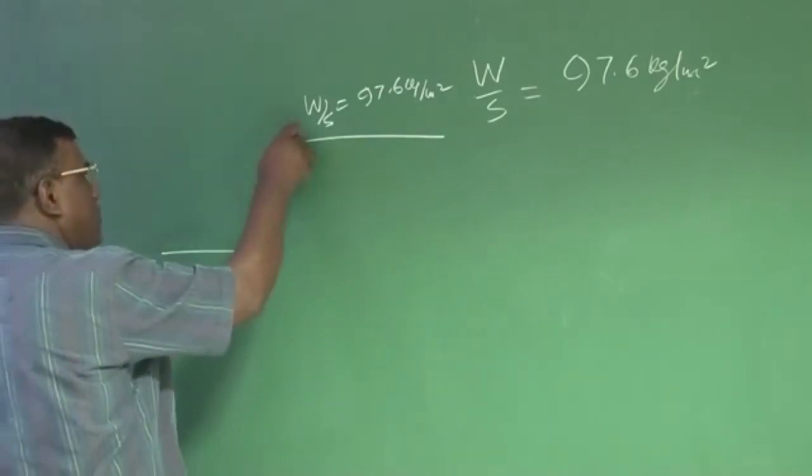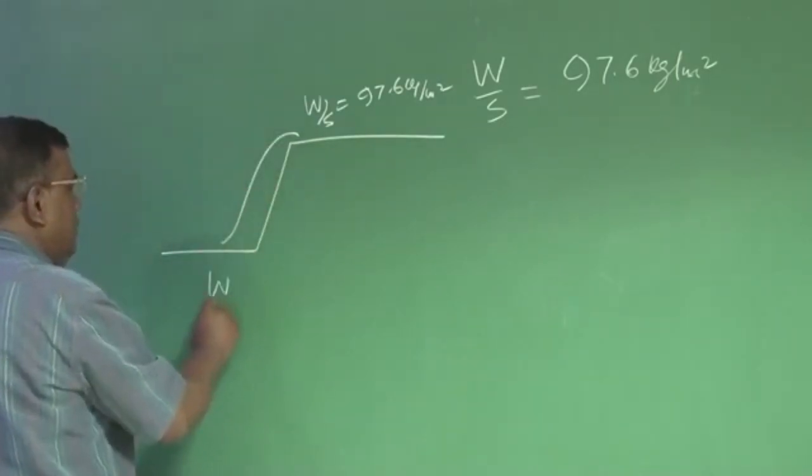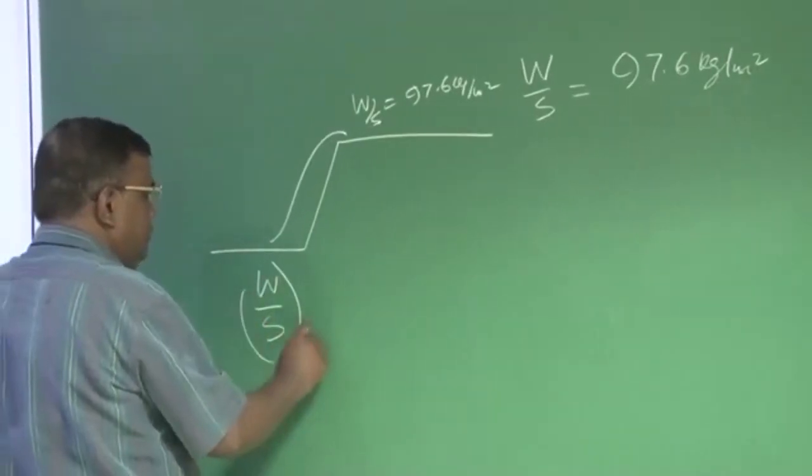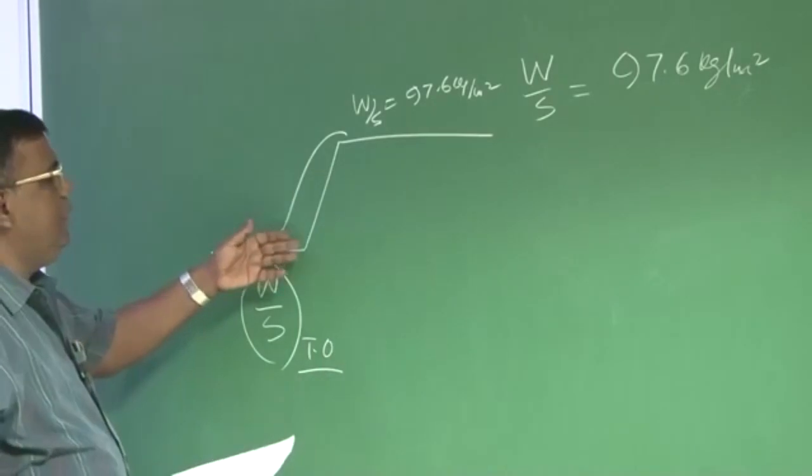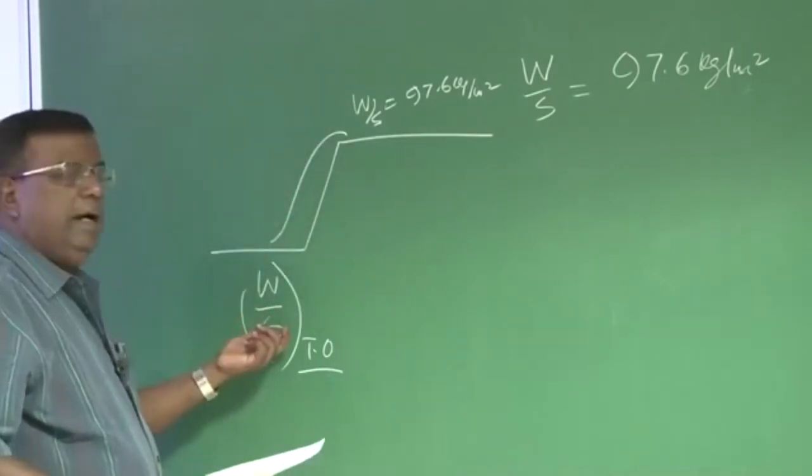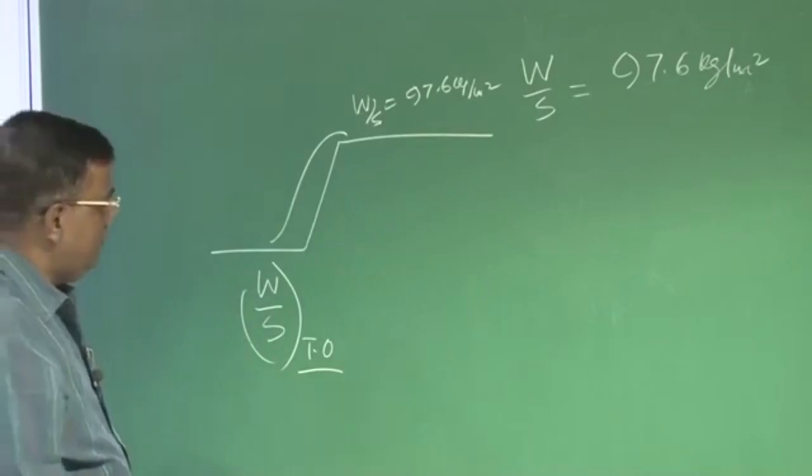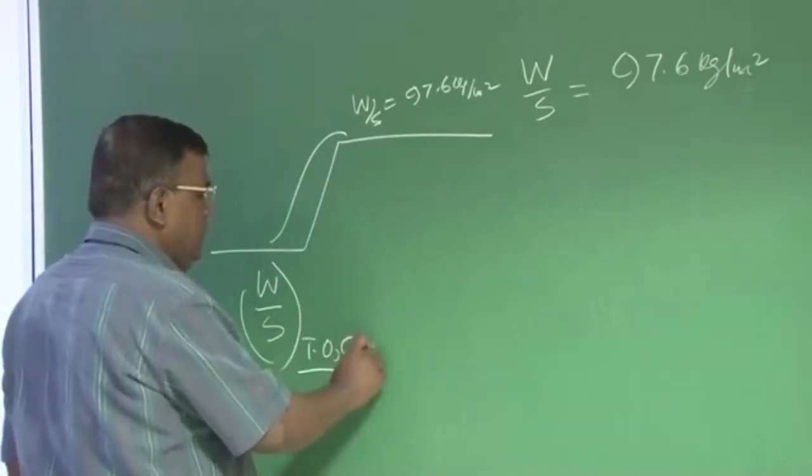That is W by S here is 97.6 kg per meter square or 20 pound per feet square, which actually means you know how to convert it back to W by S takeoff. You know how much fuel is consumed here to here and here to here, divide by that fraction and you get W by S takeoff requirement for cruise mission.